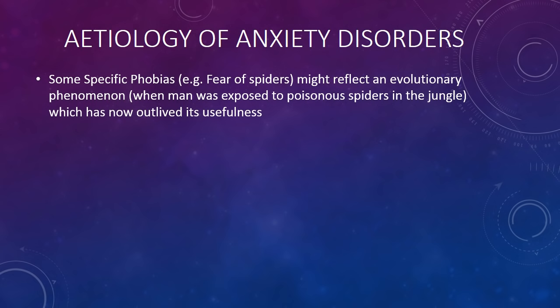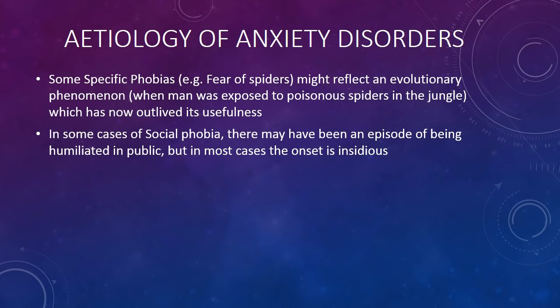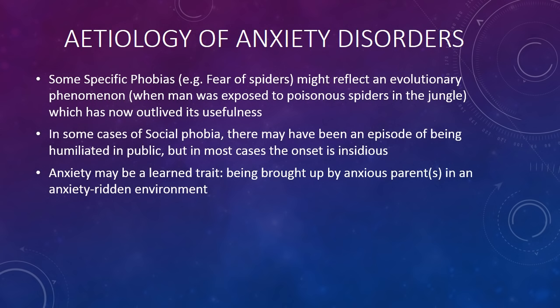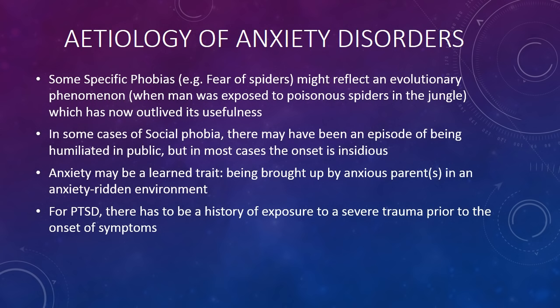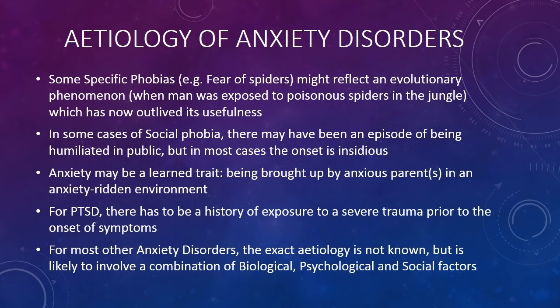Some specific phobias such as fear of spiders might reflect an evolutionary phenomenon that has outlived its usefulness. In some cases of social phobia there may have been an episode of being humiliated in public, but in most cases the onset is insidious. Anxiety may be a learned trait — for example, being brought up by anxious parents in a home environment ridden with anxiety. For PTSD, there has to be a history of exposure to severe trauma. For most other anxiety disorders, the exact etiology is not known but likely involves a combination of biological, psychological, and social factors.